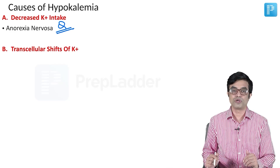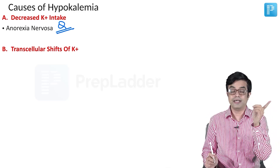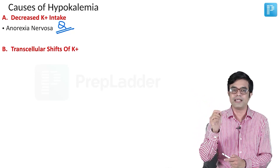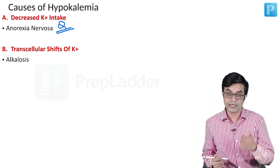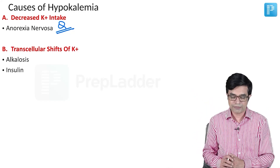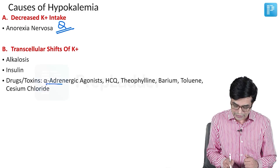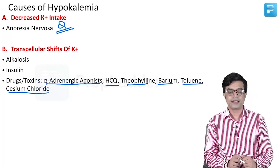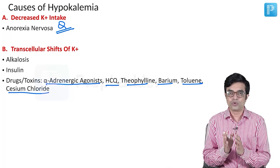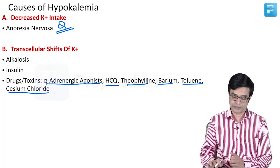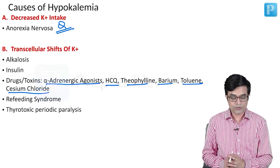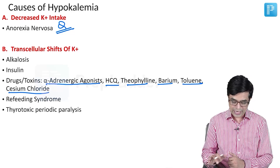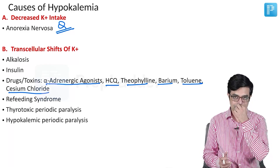Second cause of hypokalemia is transcellular shifts of potassium from blood to inside the cell — the opposite of hyperkalemia. This occurs in alkalosis (in hyperkalemia it was acidosis). Insulin can cause transcellular shift of potassium inside. Drugs or toxins like alpha-adrenergic agonists, hydroxychloroquine, theophylline, barium, toluene, and cesium chloride can all cause hypokalemia. Total body potassium remains normal. Refeeding syndrome, thyrotoxic periodic paralysis, and hypokalemic periodic paralysis — a channelopathy — also fall in this category.